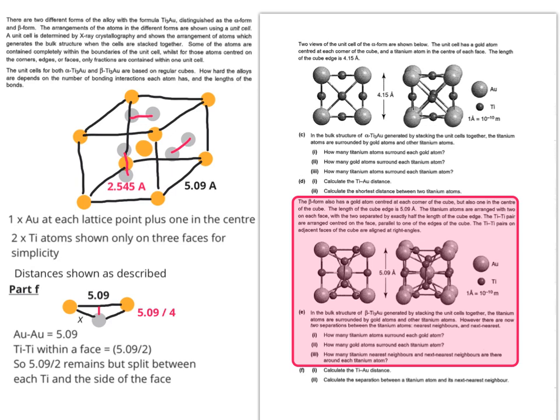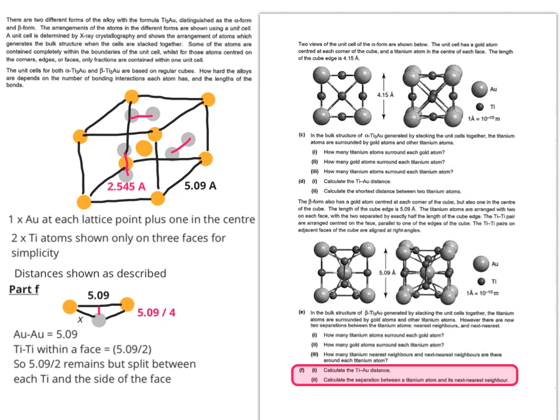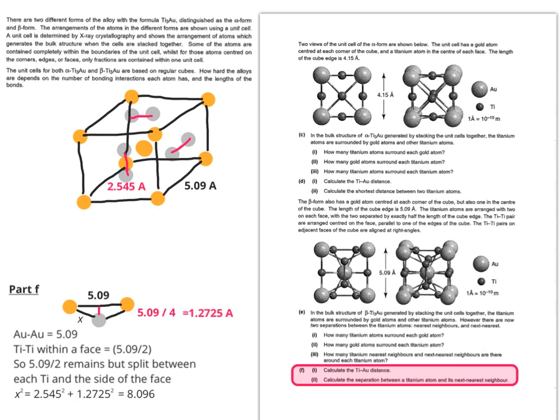Going down to part F, we need to consider the value for x. To do this, we've got to think about the distance between one of the sides and one of the titaniums. If the distance between the titaniums is 2.545 angstroms—in other words, 5.09 divided by 2—then 5.09 divided by 4 allows us to create a right-angled triangle and use Pythagoras again. Taking the hypotenuse as x, x squared equals 2.545 squared plus 1.2725 squared equals 8.096. So x is 2.85 angstroms.